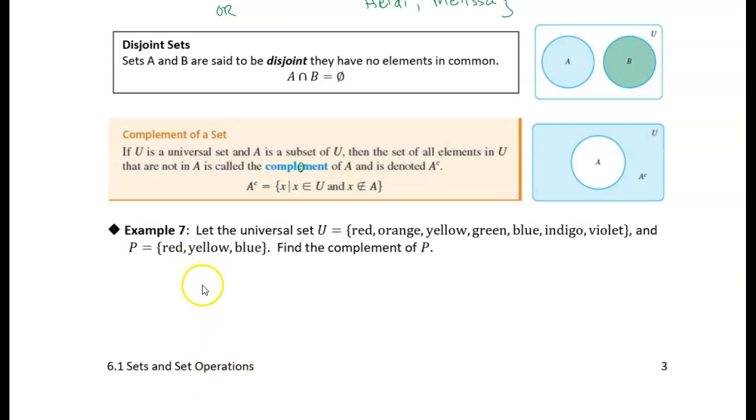All right, so we want to find, we're going to write it as P complement with a little superscript C, means complement. And we're just going to list everything in the universal set that's not part of the set P. So it looks like red is part of P, so we'll skip that one.